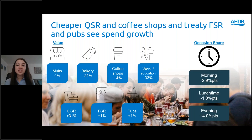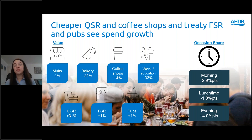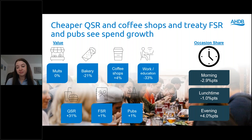When we look at the time of day that we're eating out, morning and afternoon are seeing a drop in share while evening meals are gaining, showing that when we do choose to go and eat out or get a takeaway, we're looking for that more special occasion meal rather than a quick lunch.